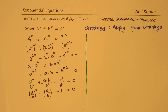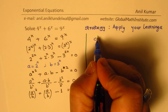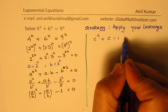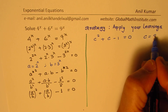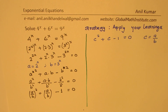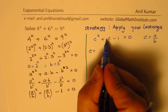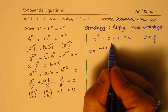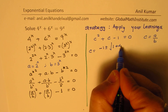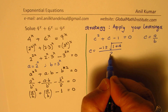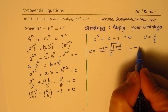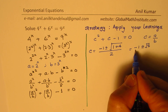Let c = a/b. Then we get: c² + c − 1 = 0. This is a quadratic equation and we can solve it using the quadratic formula. So c = [−1 ± √(1 + 4)] / 2 = (−1 ± √5) / 2.